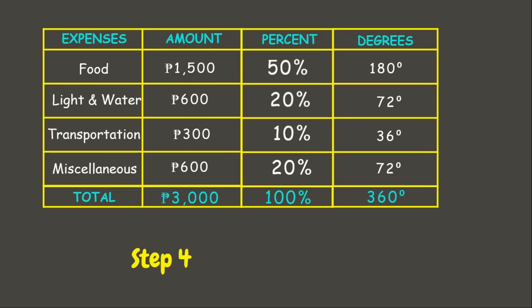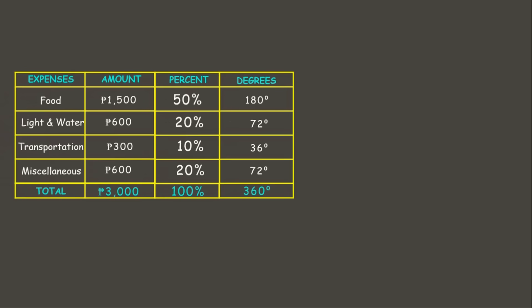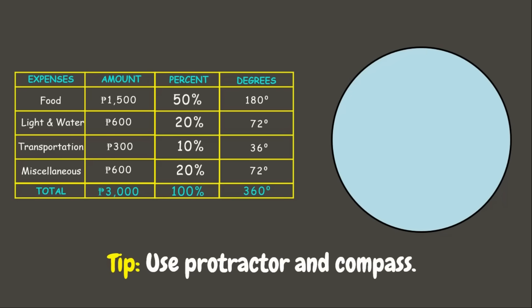Now that we already have our needed data, it's time for the next step: constructing the pie graph. Let us first draw a circle. One tip is to use a protractor or compass to accurately divide the circle according to the degrees of each item, but estimation works if a protractor is not available. For food, we have 180 degrees, which is 50 percent — so we simply divide the circle in half.